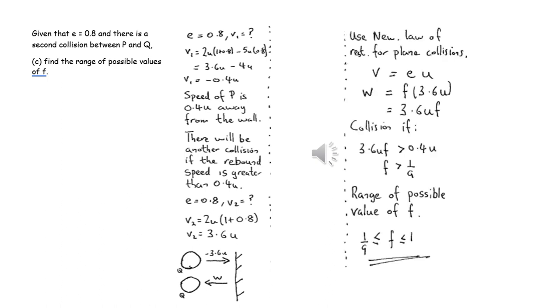We've been given the value of E as 0.8, so we can substitute that back into the information from the beginning of the question. We work out that P is moving away from the wall with this value. We can work out the speed that Q comes away from the wall at, and if there's going to be a second collision, then the speed of Q after it's hit the wall has to be greater than the speed of P after its collision with Q. This enables us to get the inequality for F.